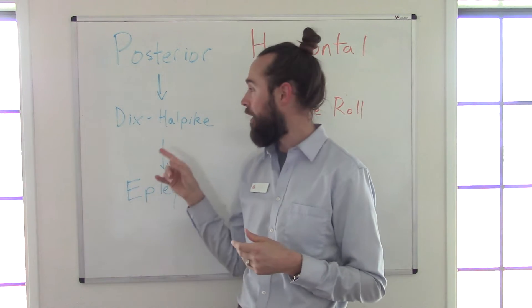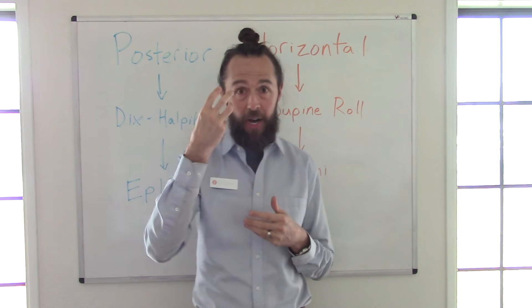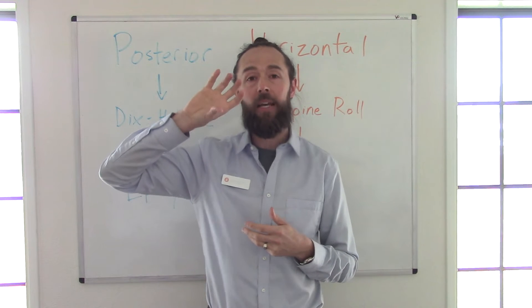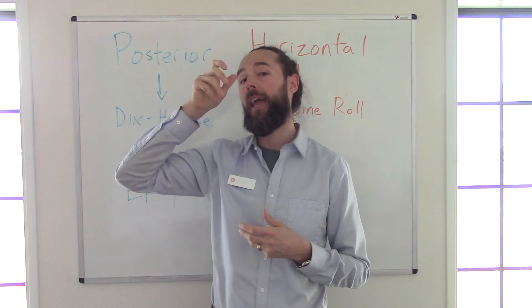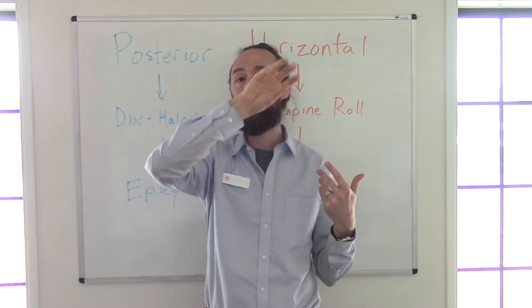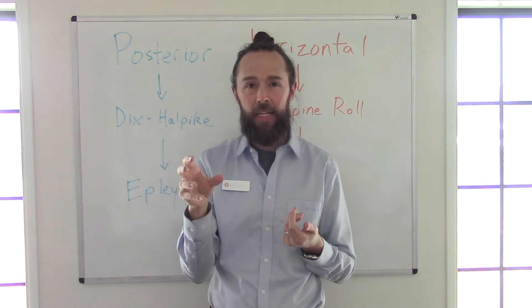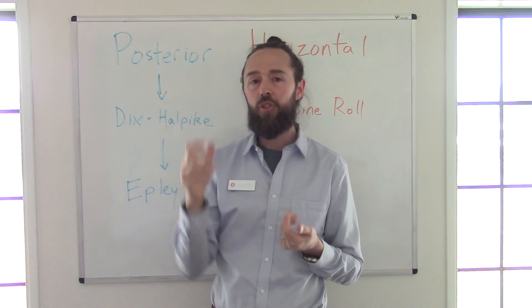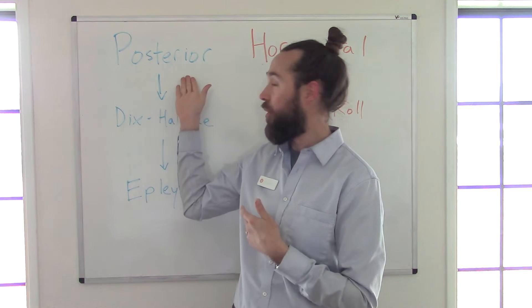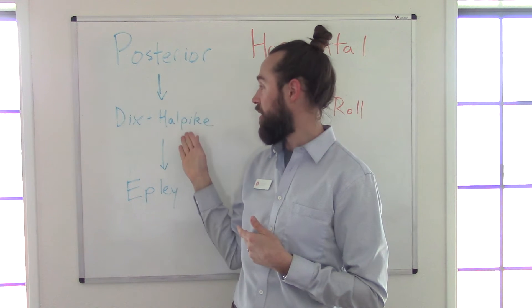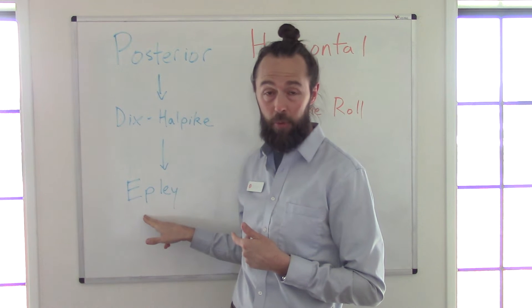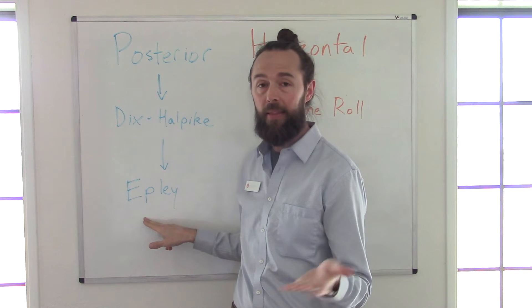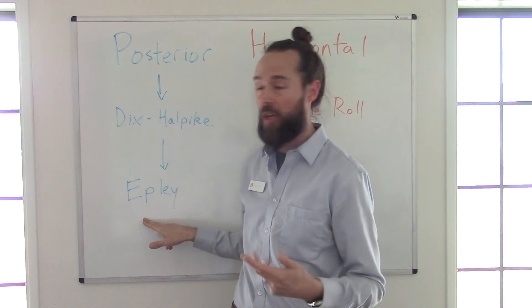Spinning is a big one. What you should typically see in terms of eye movement is a torsional nystagmus — it's going to beat up towards the right eye, or if you're doing the left side, up and towards the left. The torsion is really the key, and it's going to look like torsional up-beating flicks. That's a positive test for posterior canal BPPV. If that's the case, you're going to use the Epley maneuver to treat it.